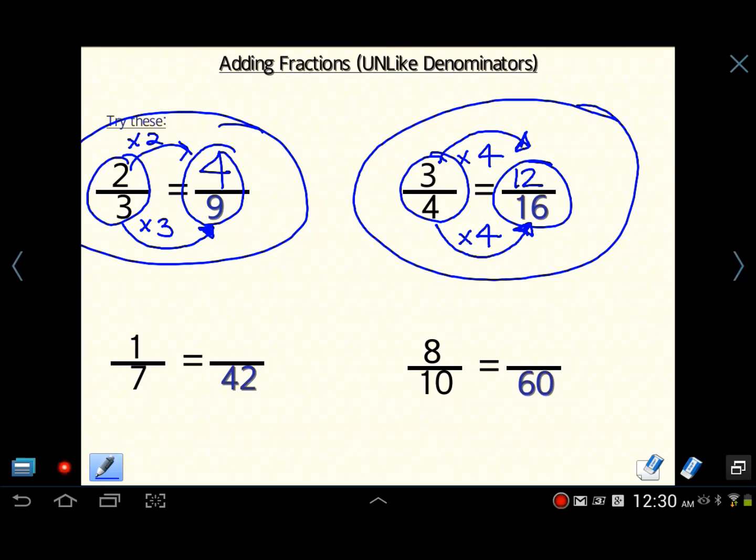The next one. How many times does seven factor into forty-two? Seven times six is forty-two. Therefore, we're going to do times six up here. One times six is six.